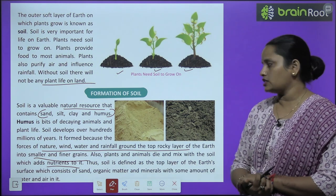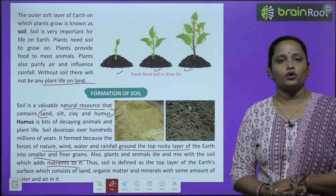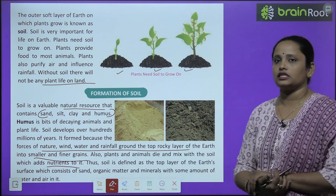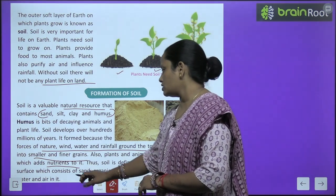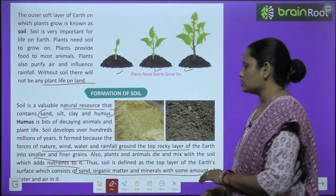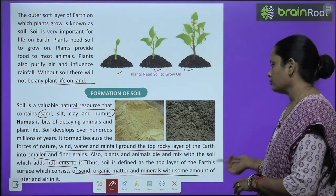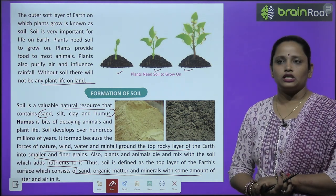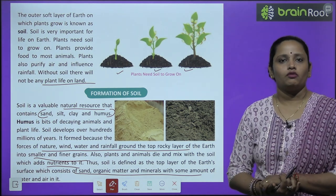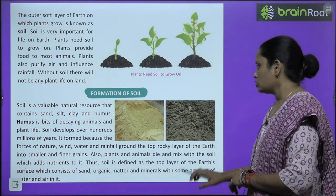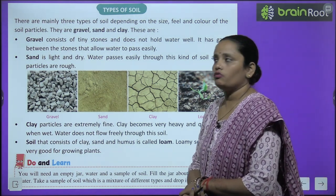The soil is defined as a top layer of the earth's surface which consists of sand, organic matter, minerals, with some amount of water and air in it. So this is how soil is formed.